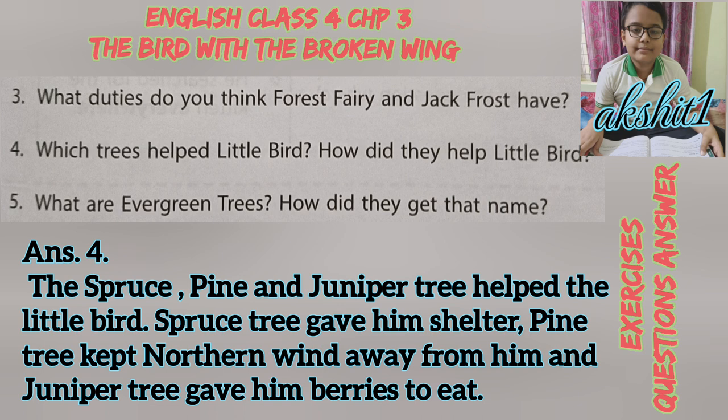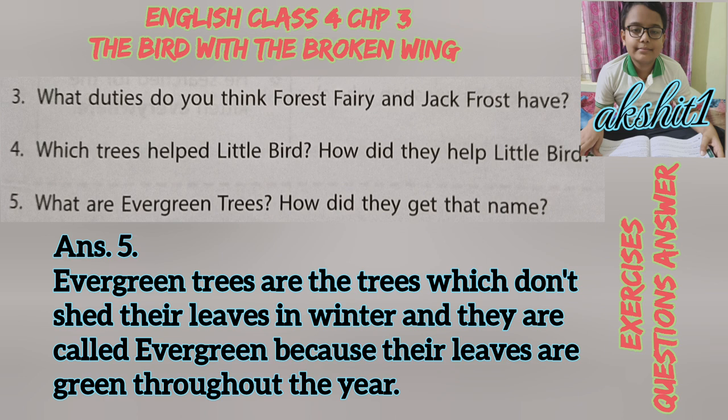Question number four: Which tree helped the little bird? How did they help the little bird? Answer: The spruce, pine, and juniper trees helped the little bird. The spruce tree gave him shelter, the pine tree kept the northern wind away from him, and the juniper tree gave him berries to eat.